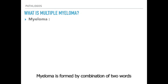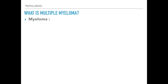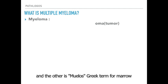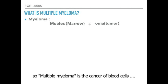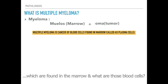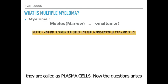Myeloma is formed by combination of two words: one is 'oma' which means tumor, and the other is 'myelos'. Myelos is the Greek term for marrow. So multiple myeloma is the cancer of blood cells which are found in the marrow, and those blood cells are called plasma cells.